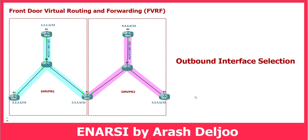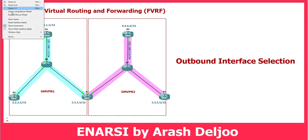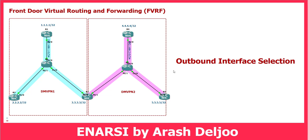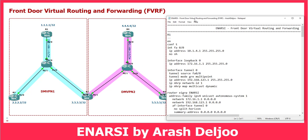I'm going to configure this scenario from scratch because I want to show you what is happening. After that, we can talk about the problem and solution. It is easy, and I'm going to use one notepad file for easier and faster configuration. We can start from the configuration of Router 1.